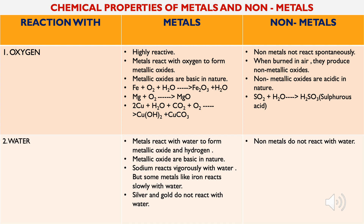Now let us discuss the chemical properties of metals and non-metals. When metals react with oxygen, they are highly reactive and form metallic oxides, which are basic in nature. When iron is kept in the atmosphere and comes in contact with oxygen and water, ferrous oxide — rust — is formed. When magnesium ribbon is burned, it forms magnesium oxide ash.